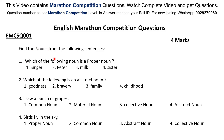Find the nouns from the following sentences. Which of the following is a proper noun? Singer, Peter, Milk, Sister. Which of the following is an abstract noun? Goodness, Bravery, Family, Childhood. I saw a bunch of grapes — is this a common noun, material noun, collective noun, or abstract noun? Birds fly in the sky — is this a proper noun, common noun, abstract noun, or collective noun?